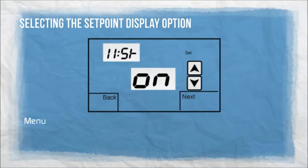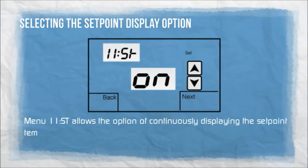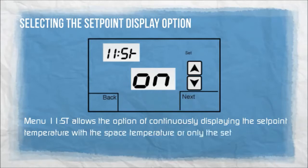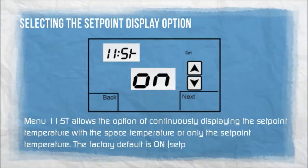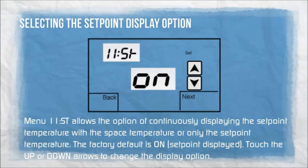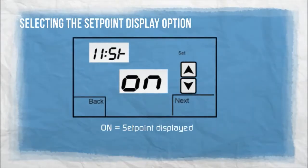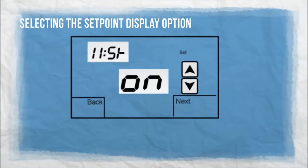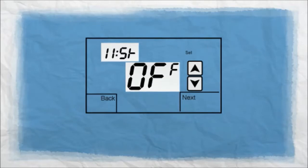Menu 11ST allows the option of continuously displaying the set point temperature with the space temperature, or only the set point temperature. The factory default is on — set point displayed. Touch the up or down arrows to change the display option. On: set point displayed. Off: no set point displayed.